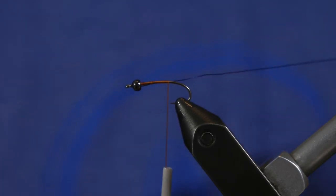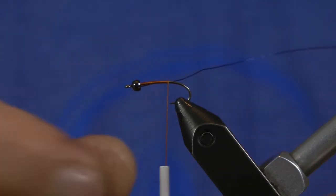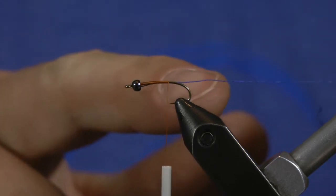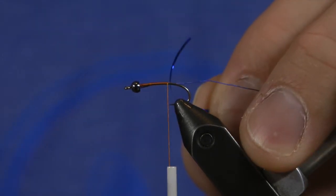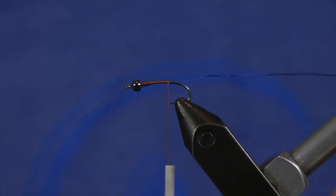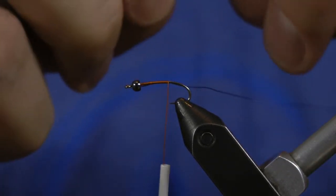To start with this specific version, I'm going to tie it in blue. I'm using a blue wire and blue hollow tinsel, and those two different materials represent the top and bottom of the fly.